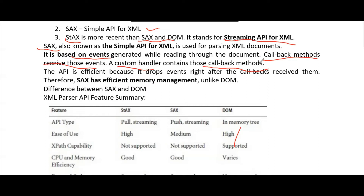Callback methods receive these particular events. To actually handle these events, you need to write code — this is called the custom handler, which contains those callback methods. These callback methods will receive the events, and you need to write the code in those methods describing how to handle those events.